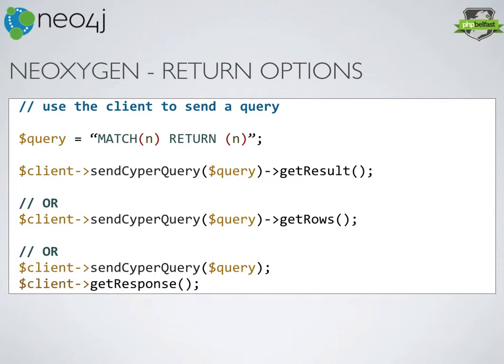If you want to get everything, your query would be MATCH n RETURN n. You send that to the Neo4j database and use getResult to get the result — so $result = $client->sendCypherQuery()->getResult(). Alternatively, you can use getRows, which gives you a slightly different result set as an array that's easier to work with. Or you can use getResponse, which you run on the client itself rather than on the result set — it gives you the raw response, which is chunkier to parse but sometimes useful.